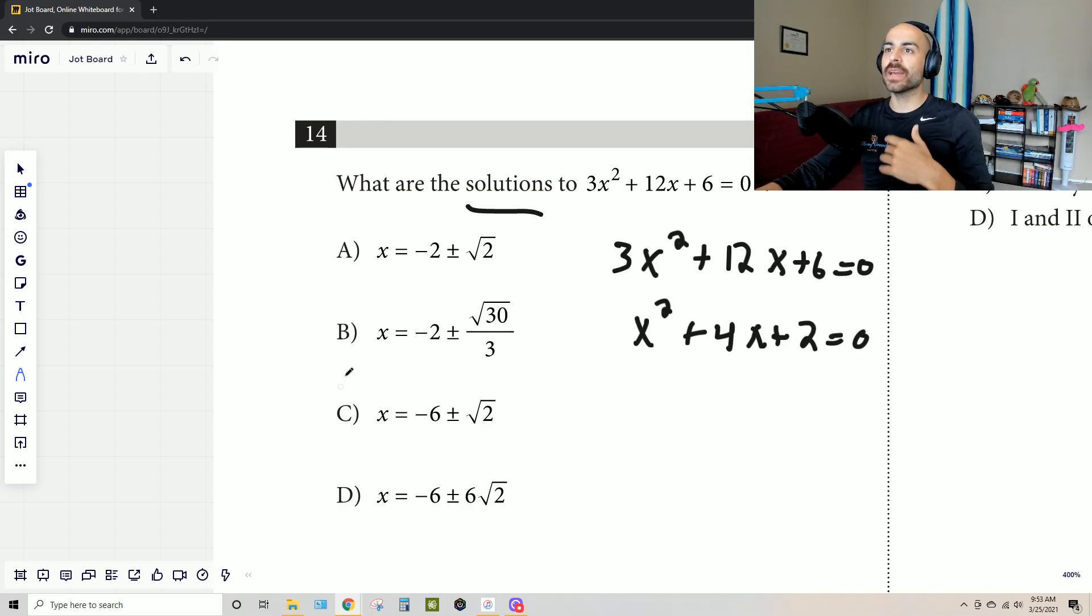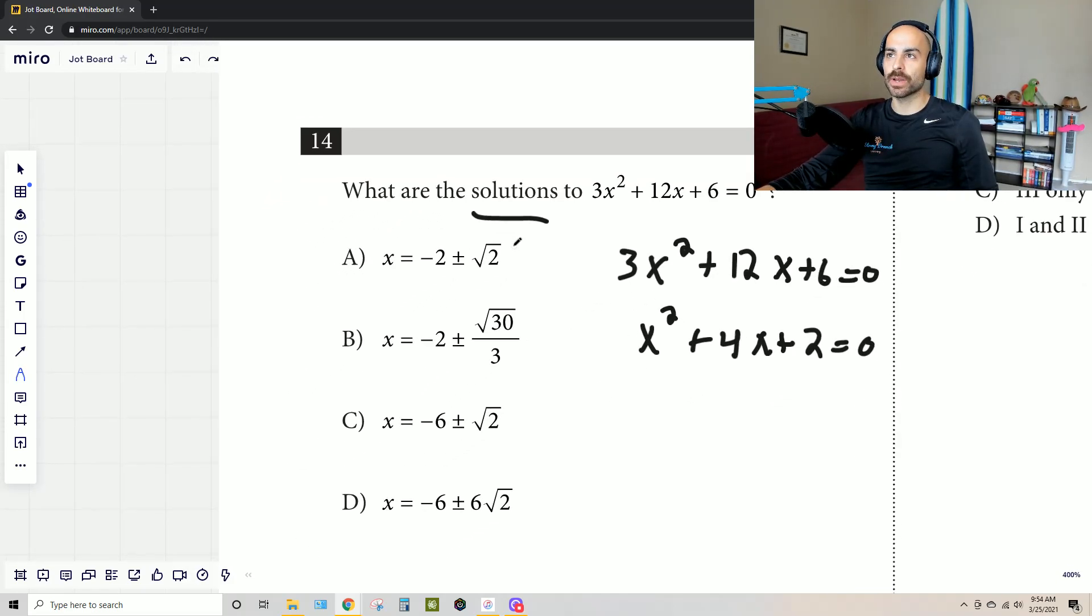Also, we look at our answer choices, and we can see that there's a few ways to get to your roots, solutions, zeros, x-intercepts, whatever you want to call them, and that is by factoring or graphing, which you can't do on this no calculator section, or using the quadratic formula. Now, our answer choices here are telling us we obviously want to use the quadratic formula because we can see that you got that plus or minus square root situation going on.